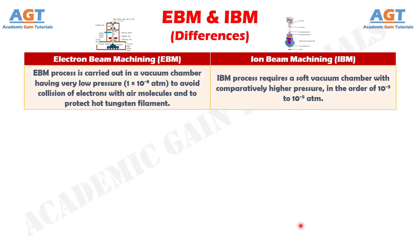Number 6. Electron Beam Machining process is carried out in a vacuum chamber having very low pressure of around 10 inverse 8 atmospheric pressure, to avoid collision of electrons with air molecules and to protect the hot tungsten filament. Whereas, Iron Beam Machining process requires a soft vacuum chamber with comparatively higher pressure, in the order of 10 inverse 3 to 10 inverse 5 atmospheric pressure.